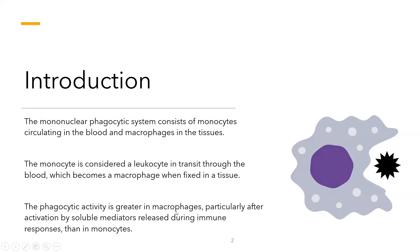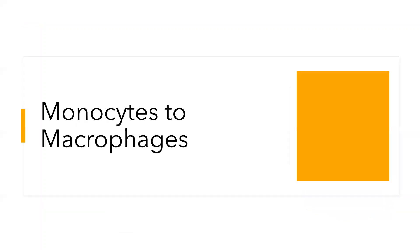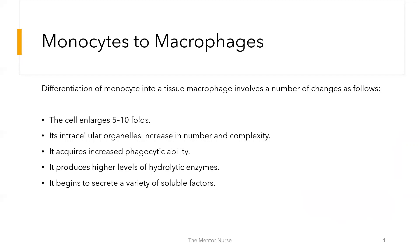Macrophages are phagocytic in nature, and that is their major function, though they have other functionalities such as becoming antigen presenting cells. Once activated, they take up the pathogen or antigen, engulf it, and use enzymes and other mediators to dissolve it. The key points: monocytes are in transit, macrophages are fixed in tissues, and the major function is phagocytosis.